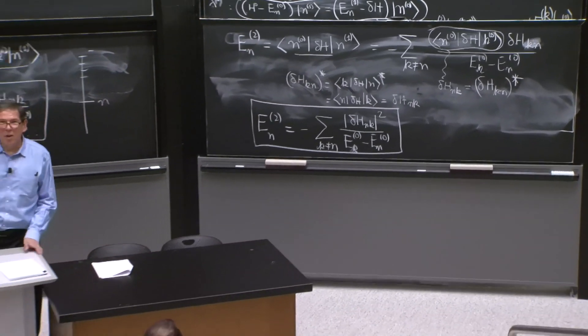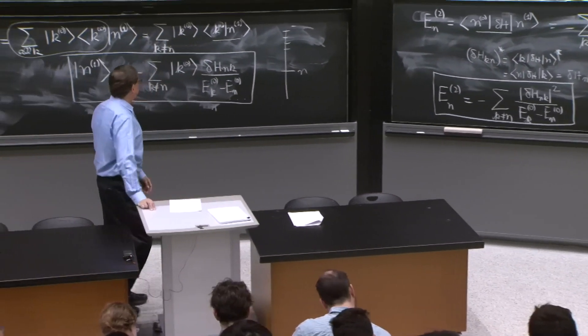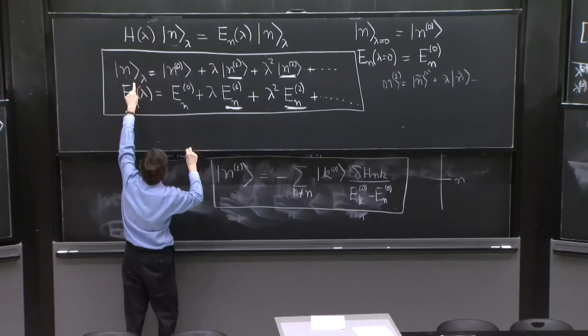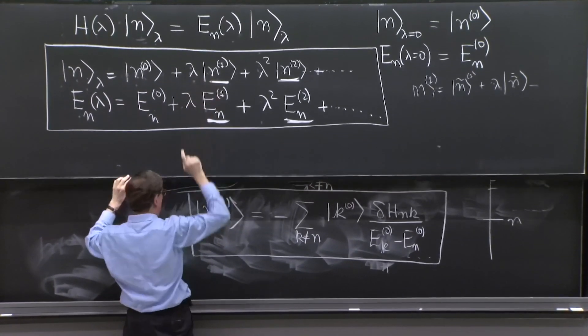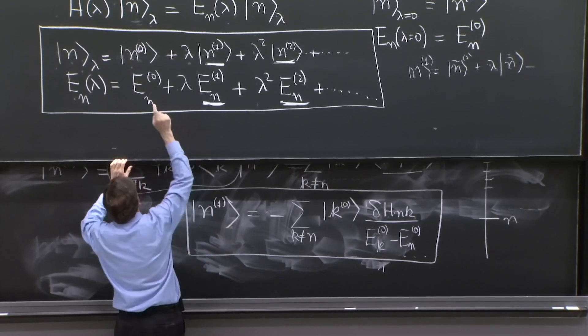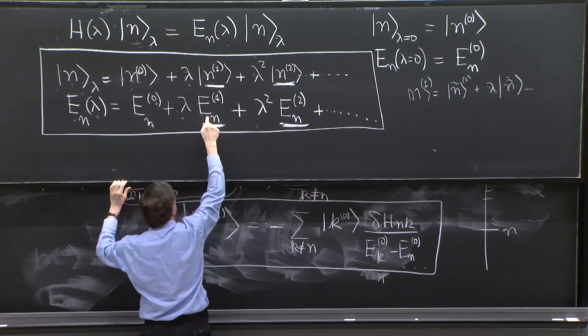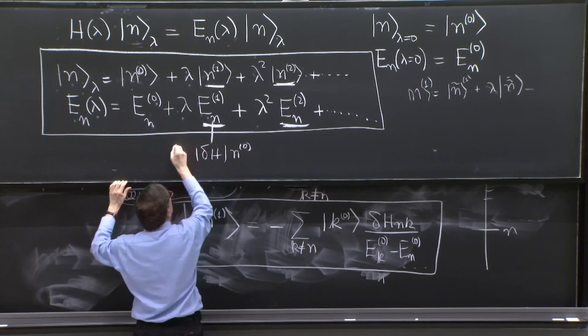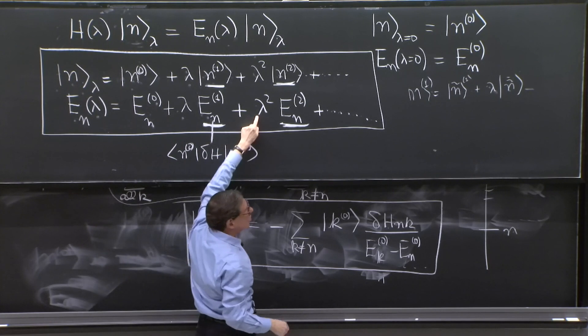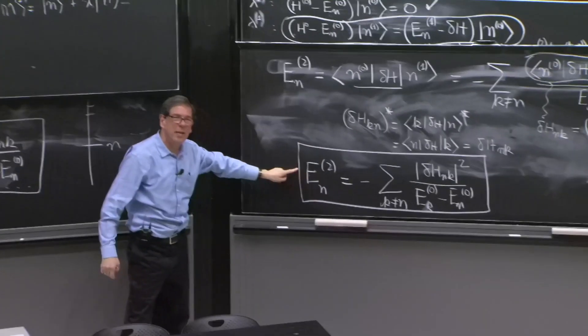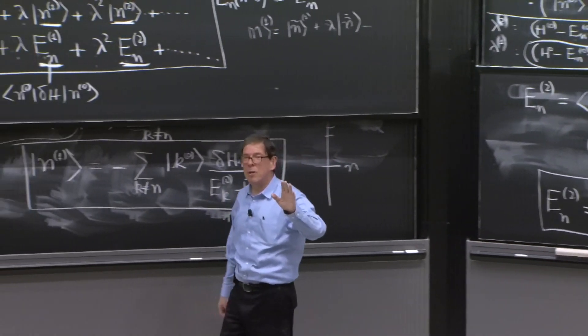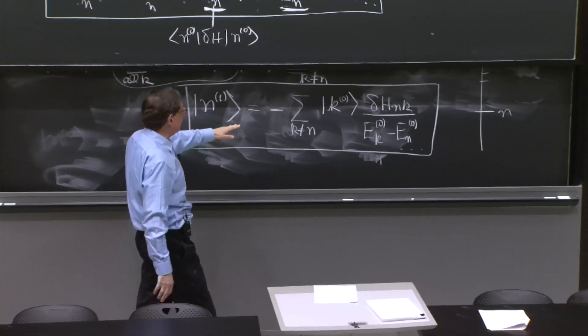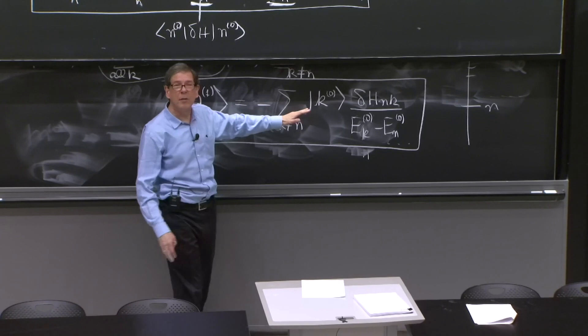So we've done a lot of work. We've written the perturbation. Here is the answer. So far, we have n of lambda equal n0 plus lambda n1. n1 has been calculated. Energy is E_n0 plus lambda E_n1—that was calculated, what was just delta H in this state—plus lambda squared E_n2, which we have calculated. So this is as far as we will do for non-degenerate perturbation theory, but we have found rather interesting formulas, and we're going to spend half of next lecture trying to understand them better.